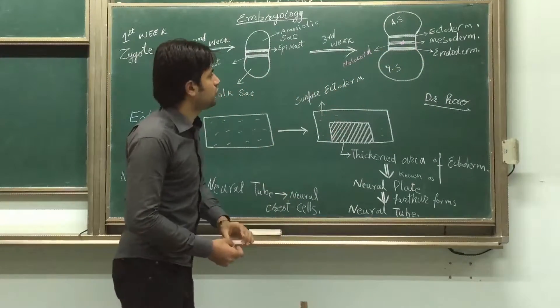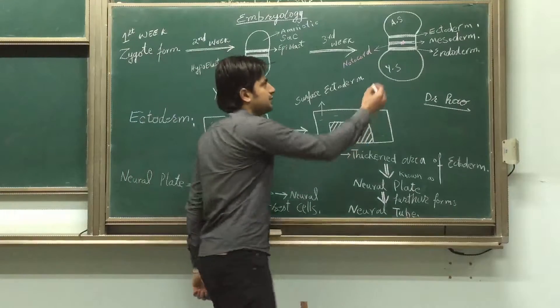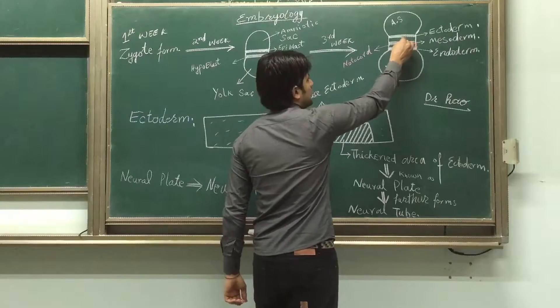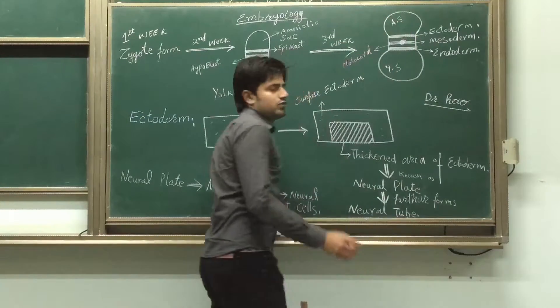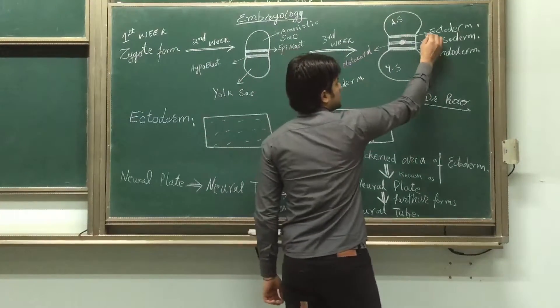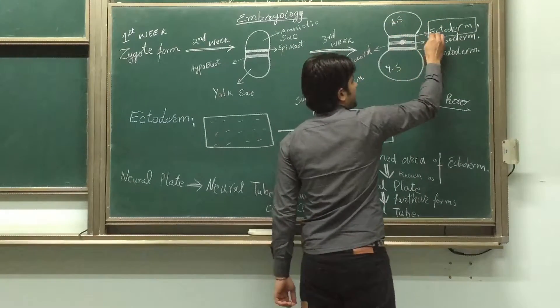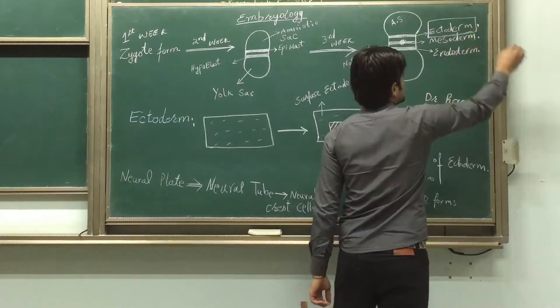But here is another thing that also forms that is the notochord. It forms in the mesoderm. Now we will discuss only ectoderm further. In the next class we will study about mesoderm and endoderm.